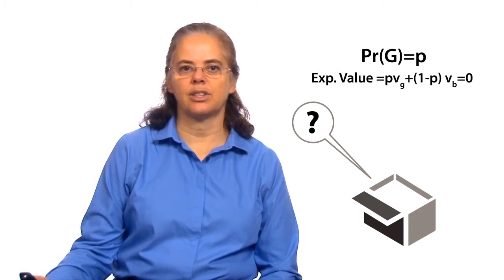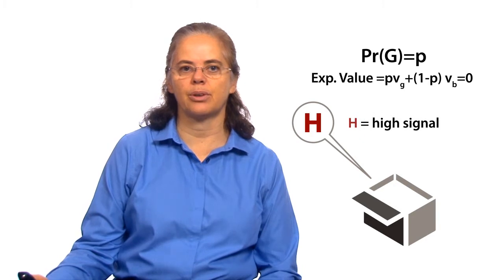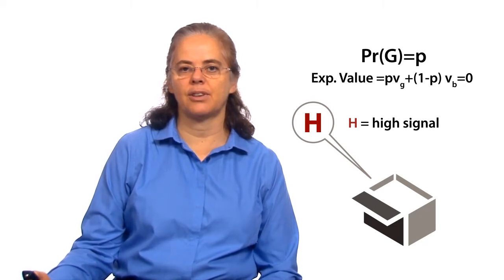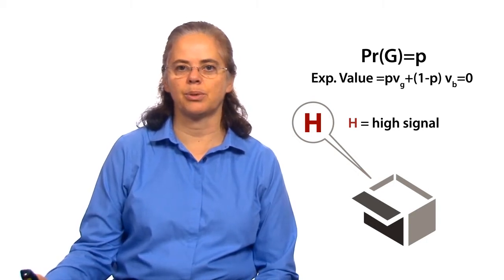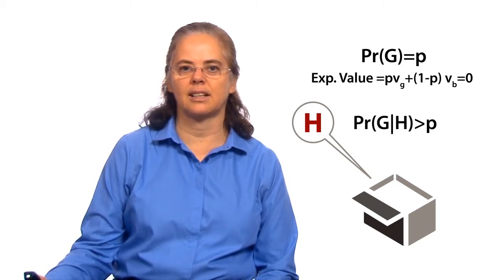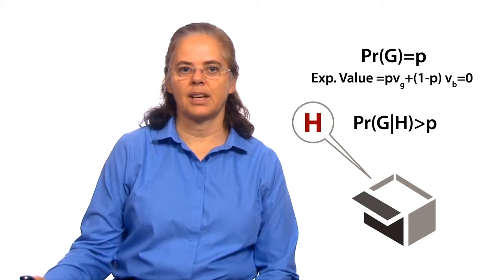With this setup, let's think about the first decision maker. What should she decide? She knows the probability that the product is good is p, and that the expected value is 0, so she wants to do some online research. If she gets a high signal from her research, she should be interested in the probability that the product is good given her high signal. The high signal should increase that probability above p, making the expected value positive. And so she should buy the product.